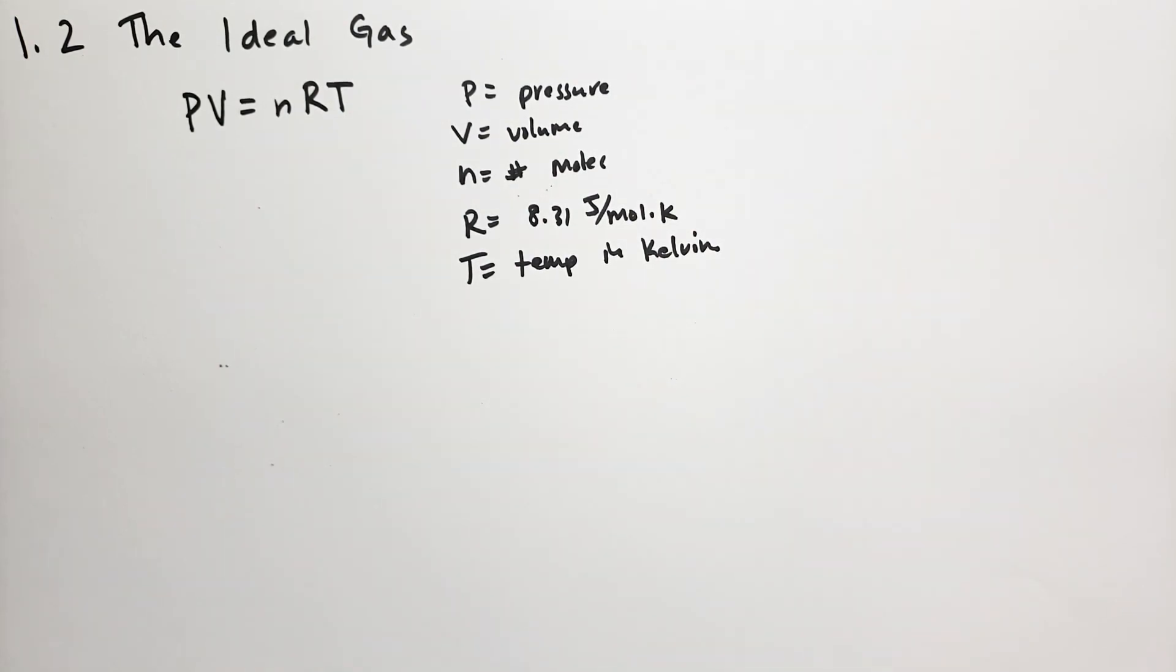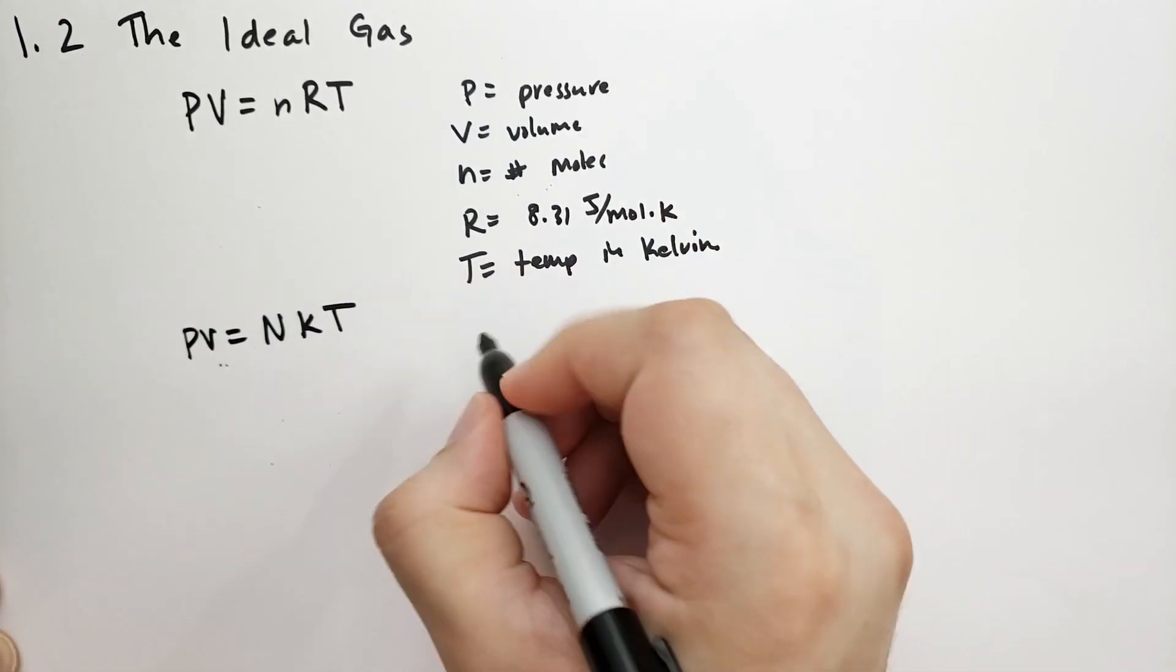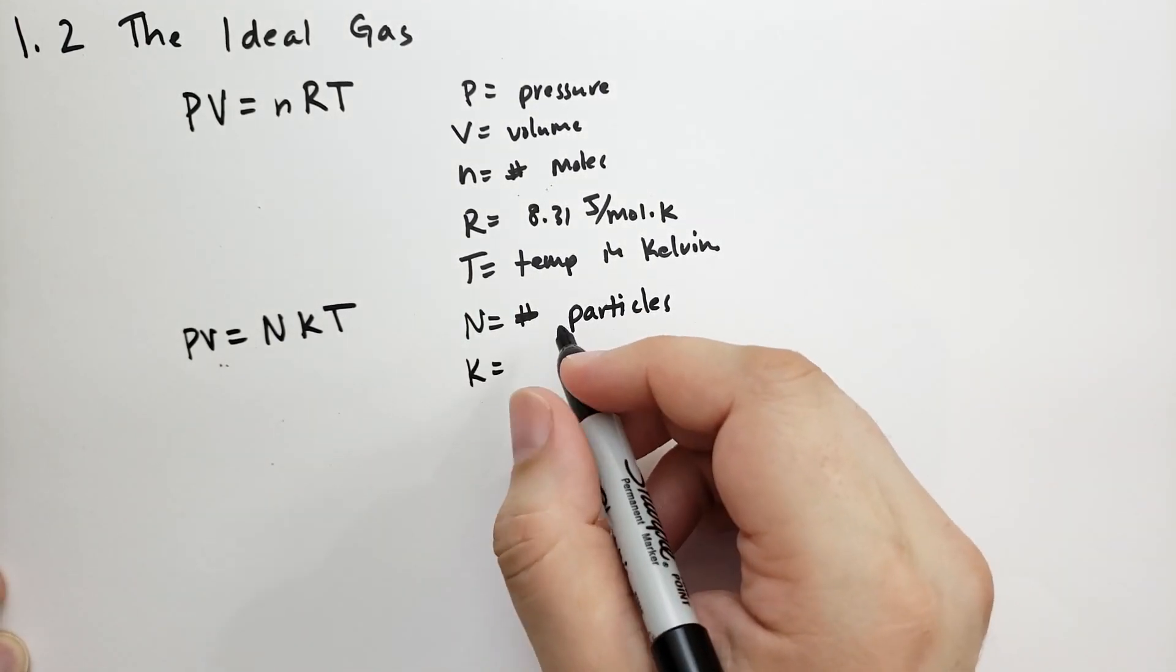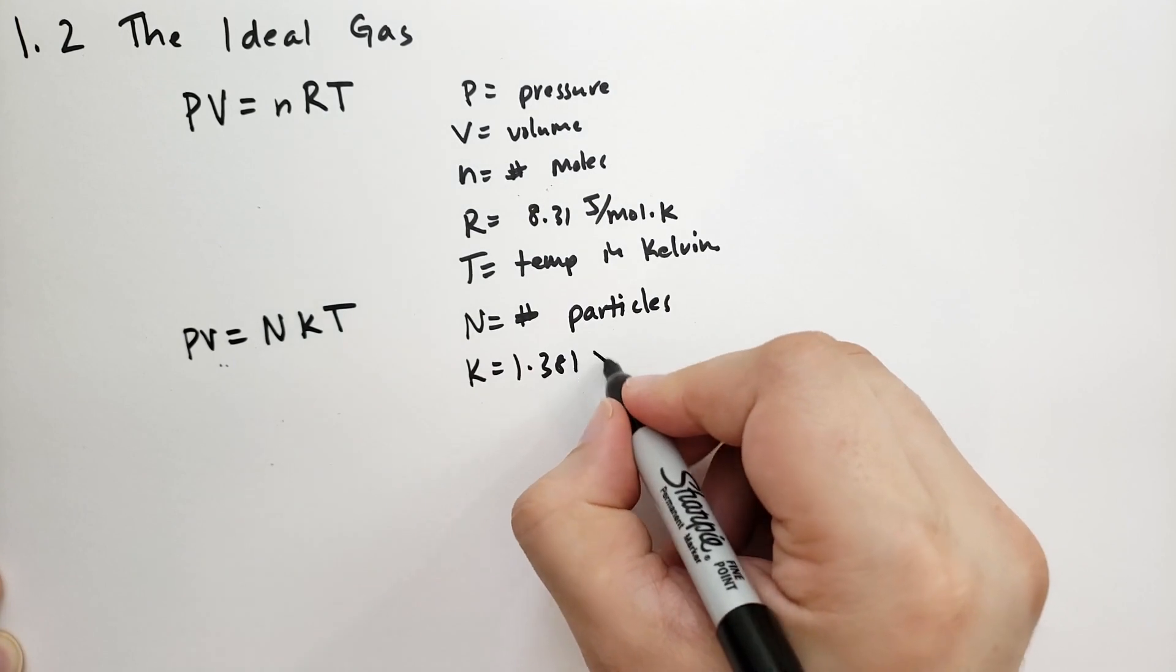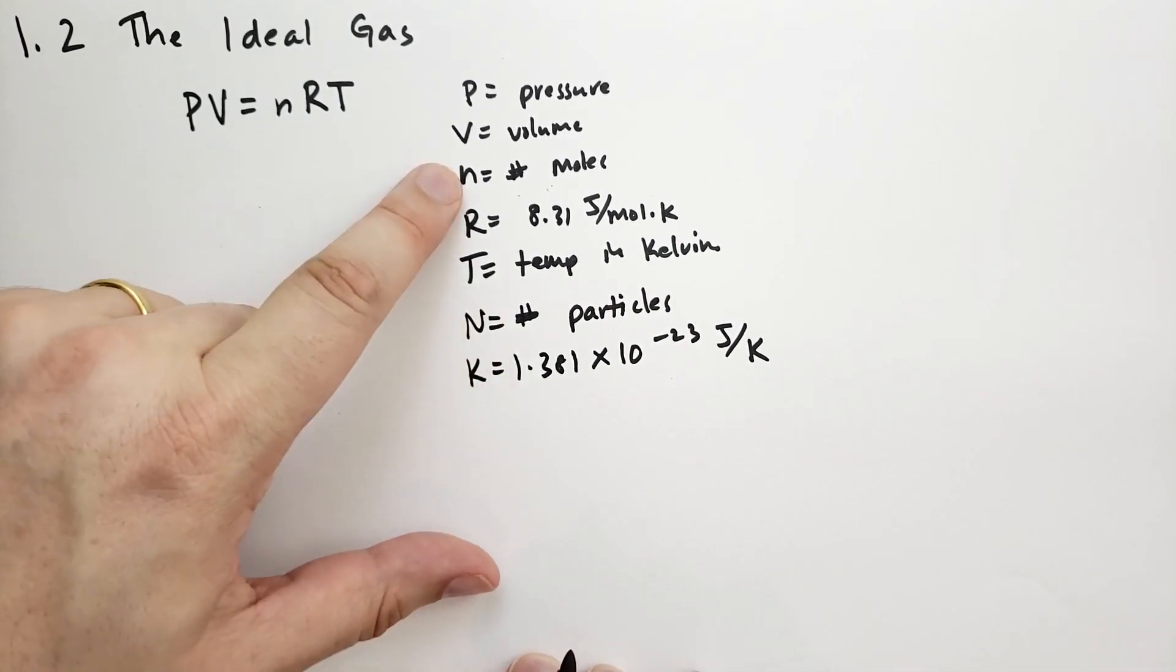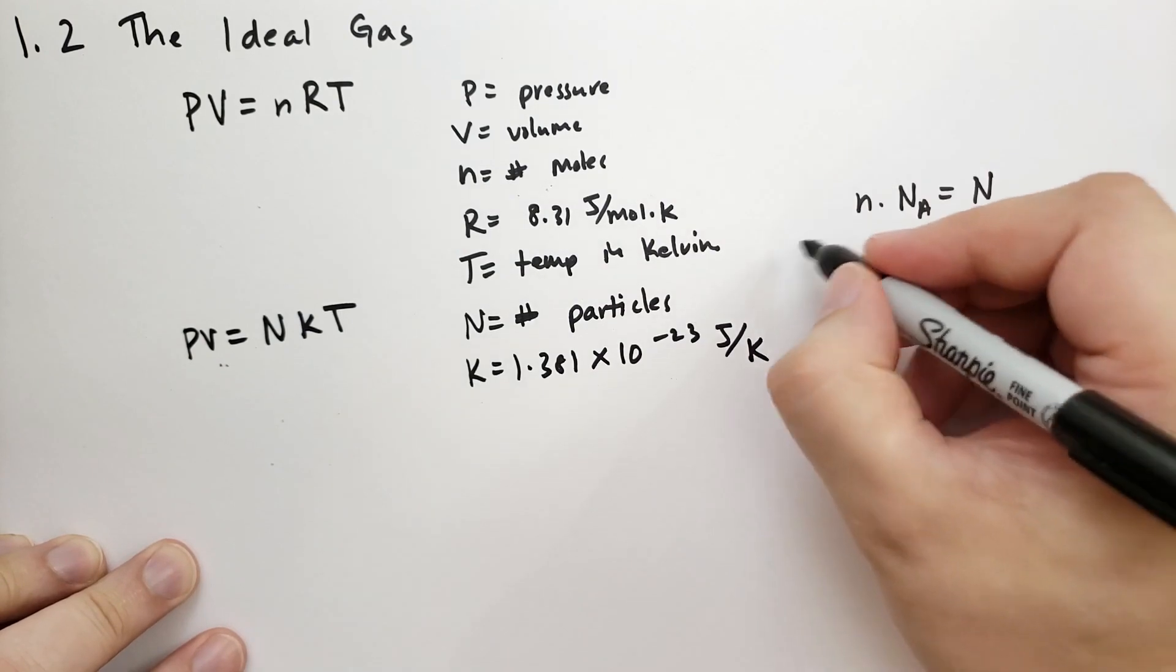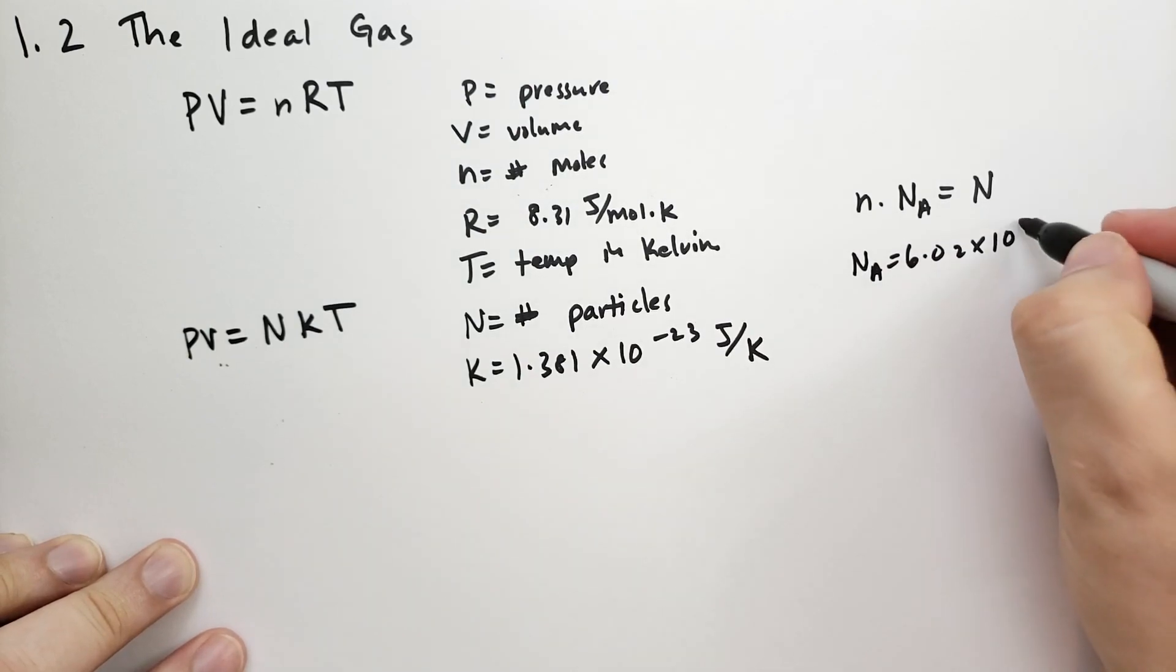You can rewrite the ideal gas law in this form, which physicists like to use: capital N, lowercase k and T. In this case, N is the number of particles, that's molecules or atoms, typically molecules. And k is the Boltzmann constant, which is 1.381 times 10 to the minus 23rd joules per kelvin. And how do you calculate the number of particles given the number of moles? We use Avogadro's number. So n times Avogadro's number equals the number of particles, where Avogadro's number is 6.02 times 10 to the 23rd.